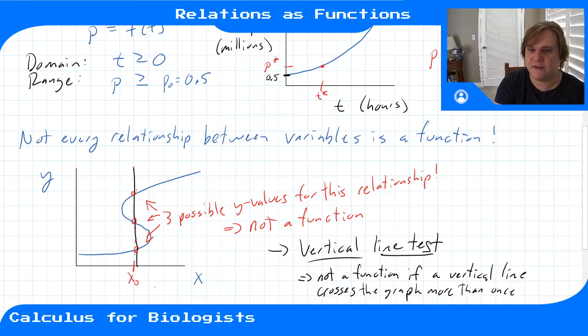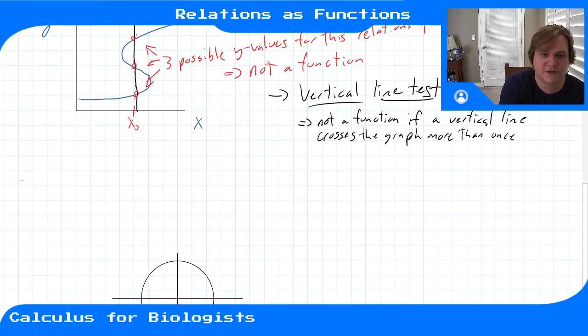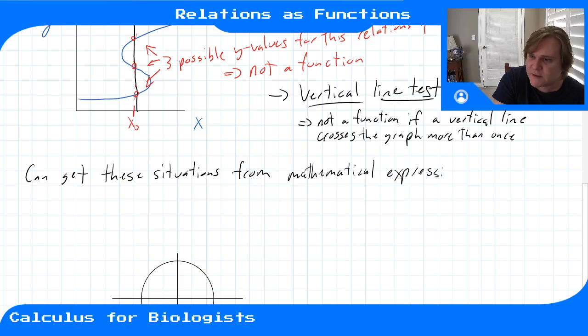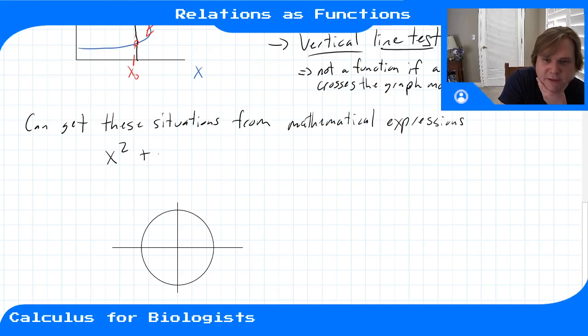And this isn't just some contrived curve that we can't describe with a mathematical expression. You can get these situations from mathematical expressions. It's not just something that I pulled out of thin air. Let's take a circle. A circle can be described by the formula x squared plus y squared equals one for this radius one.